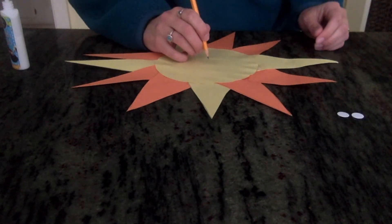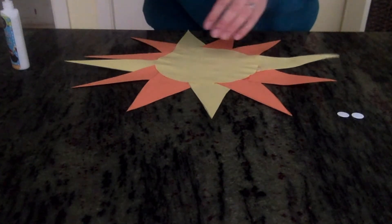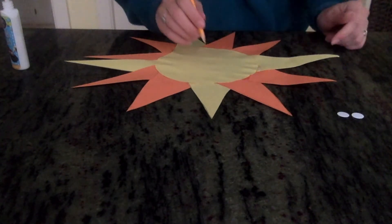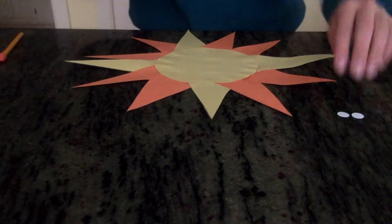We are also going to mark the center of our circle. It doesn't have to be absolutely perfect, but feel free to eyeball it and just make a little dot. And we'll use that later.